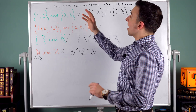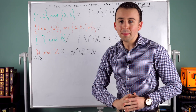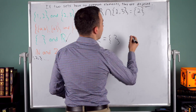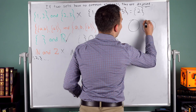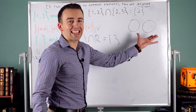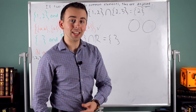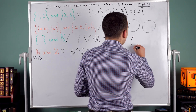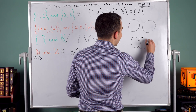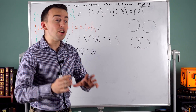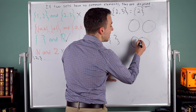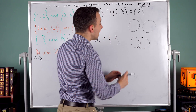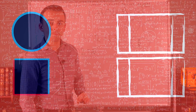Again, if two sets have no common elements, then we say they're disjoint. In a Venn diagram, disjoint sets look like two separate circles with nothing in common. Sets that are not disjoint look like overlapping circles — they have a non-empty intersection, with elements common to both of them.